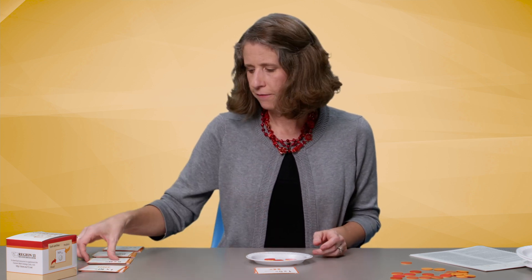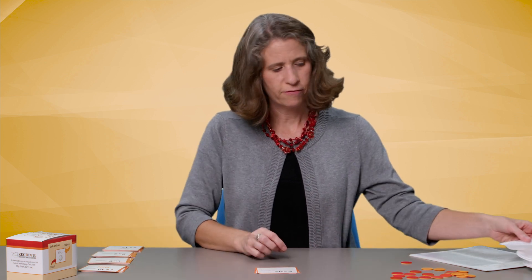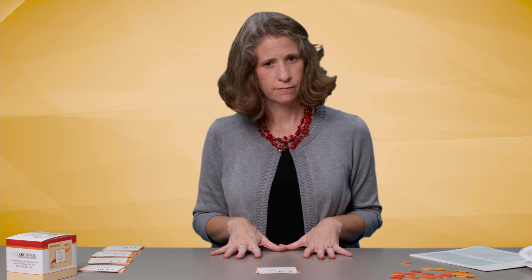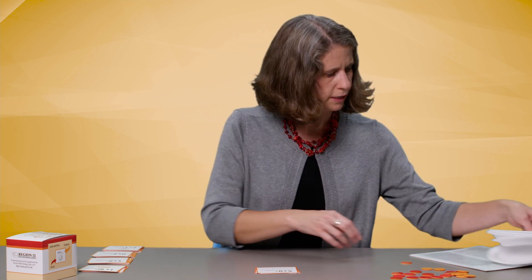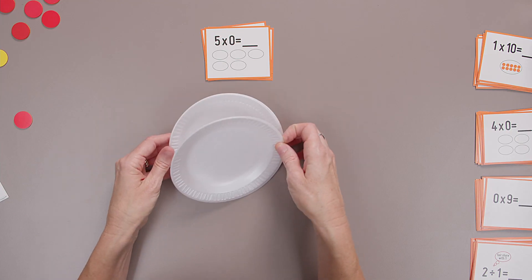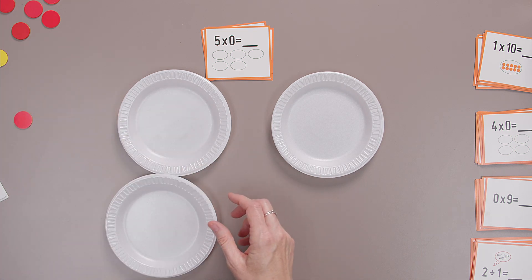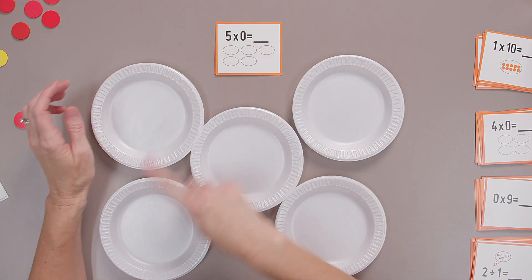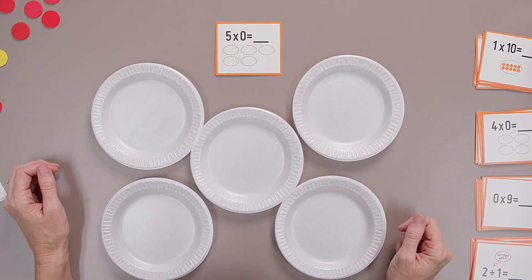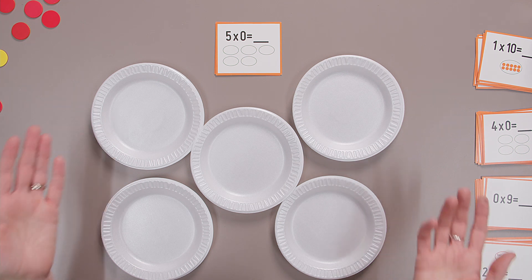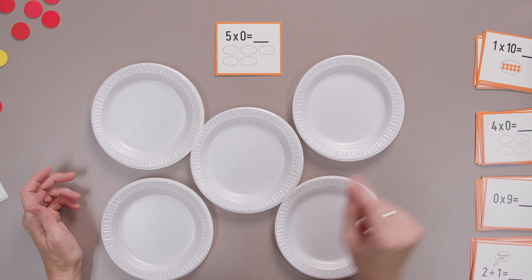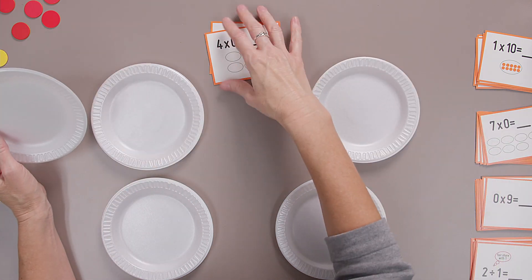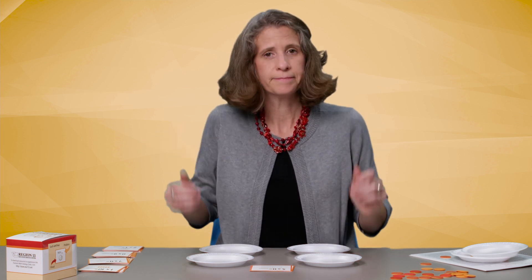How about if I have five groups of nothing? I have five groups. Let's make our five groups. Let's see, I got three, four, five groups. Five groups, nothing in each group. Five times zero is zero. I have nothing. How about four groups? Four groups of zero. Four groups of zero is zero. Still nothing. Excellent.